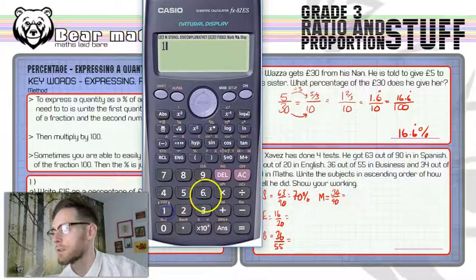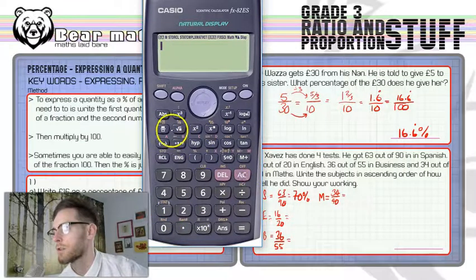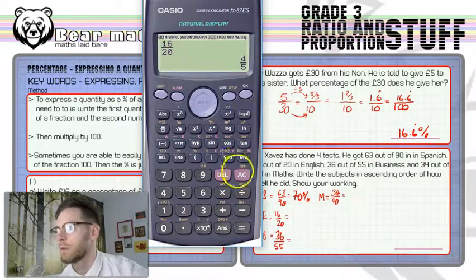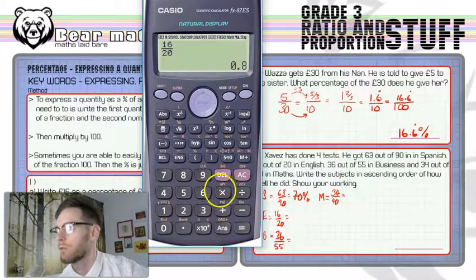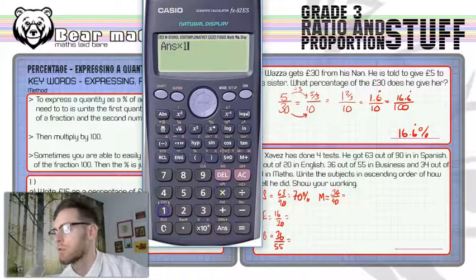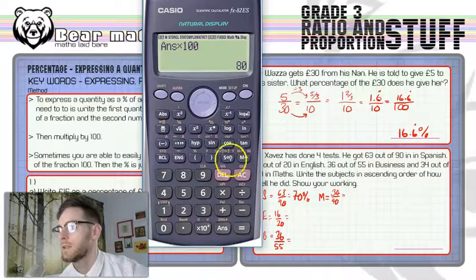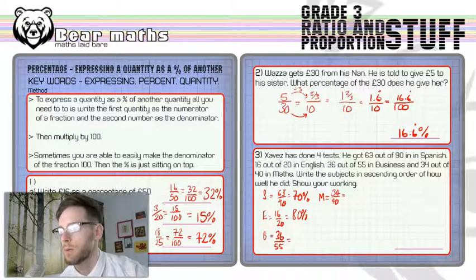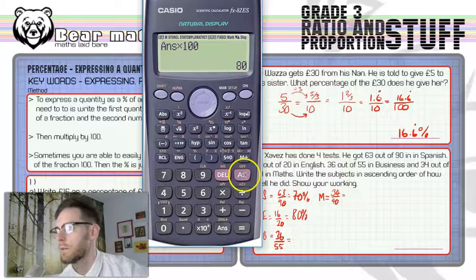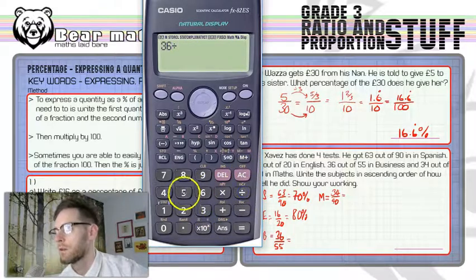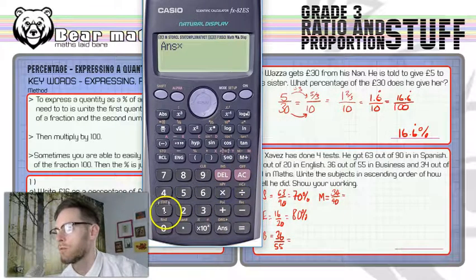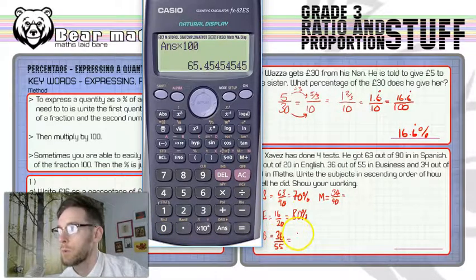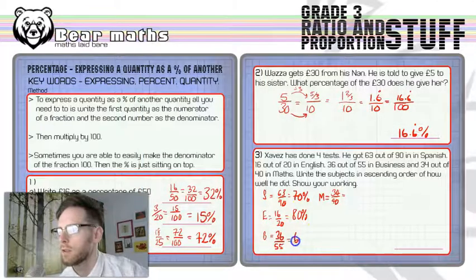You've got 63 divided by 90 equals, and then multiply that by 100. So you've got 70% on his Spanish test. English is 16 out of 20, so 16. I'll show you you can do it as a fraction as well. Just press the fraction button there. 16 out of 20 equals 4 fifths multiplied by 100, 0.8 times 100, 80%. So he's done better in English than he did in Spanish. 36 out of 55 times 100 is 65.45. We'll keep the 4.5 recurring percent there just in case.